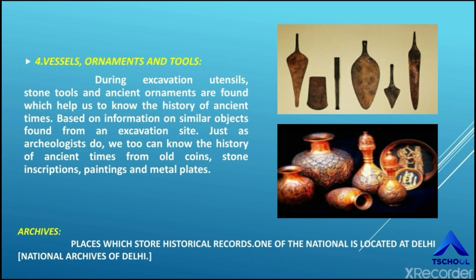The fourth one is vessels, ornaments and tools. During excavation, utensils, stones, tools and ancient ornaments are found which help us to know the history of ancient times. Based on information from similar objects found at excavation sites, just as archaeologists do, we too can know the history of ancient times from old coins, stones, inscriptions, paintings and metal plates.